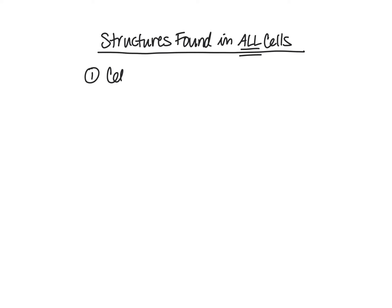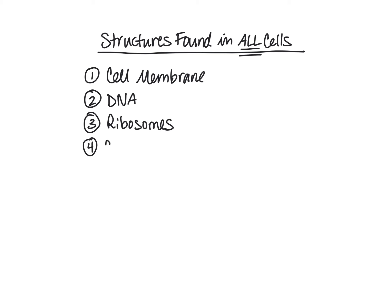Different cells have different organelles and structures associated with them, but it is important to note that there are four components associated with any cell, regardless of what type of cell it is. All cells have these four structures: they all have a cell membrane, they all have DNA, ribosomes, and cytoplasm. You'll learn more about the structure and function of these different structures in a later lesson.